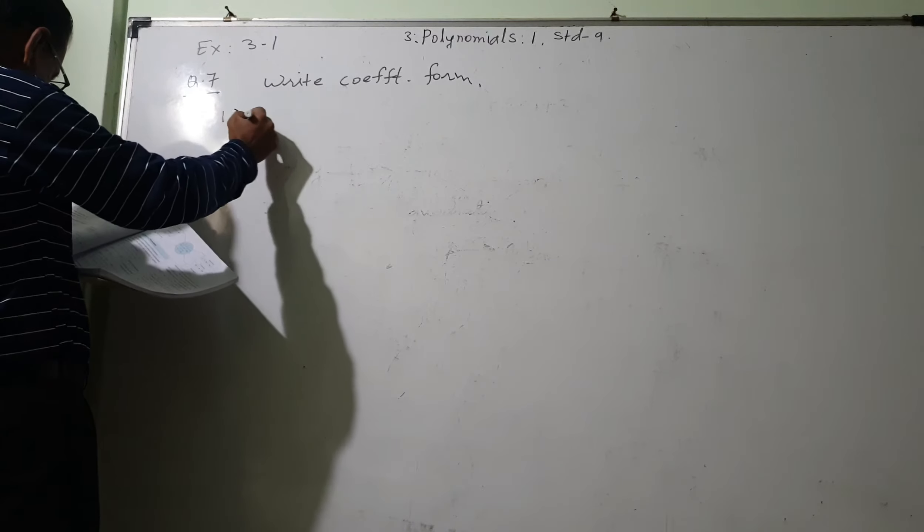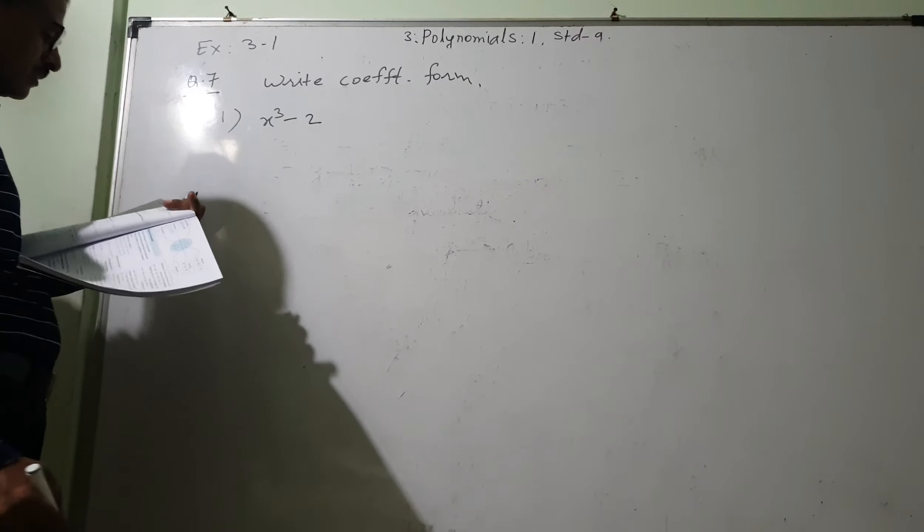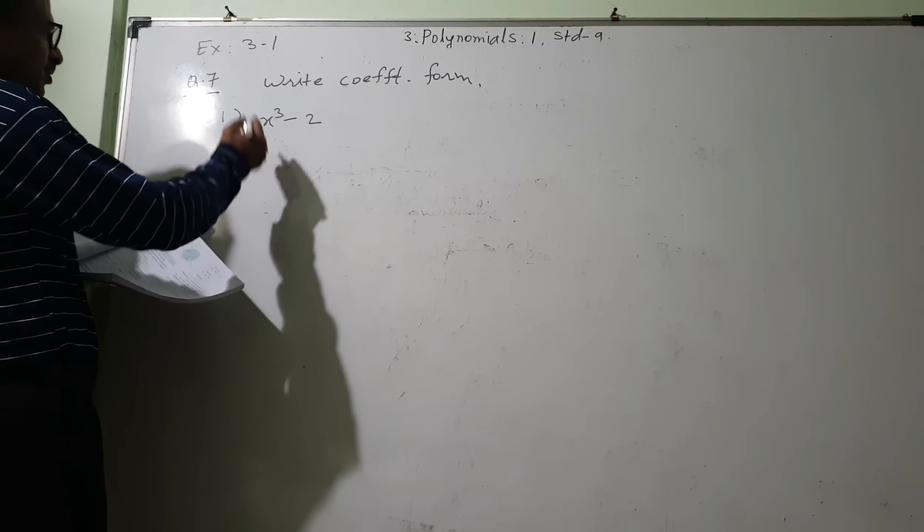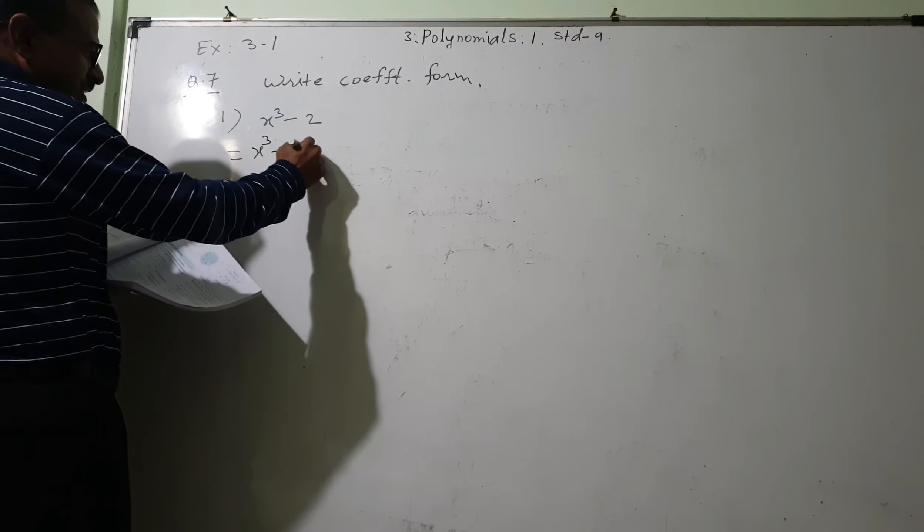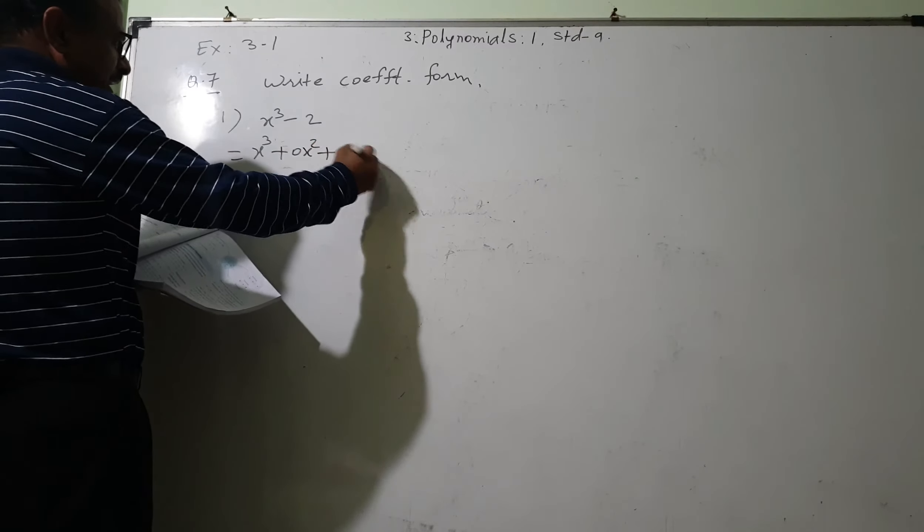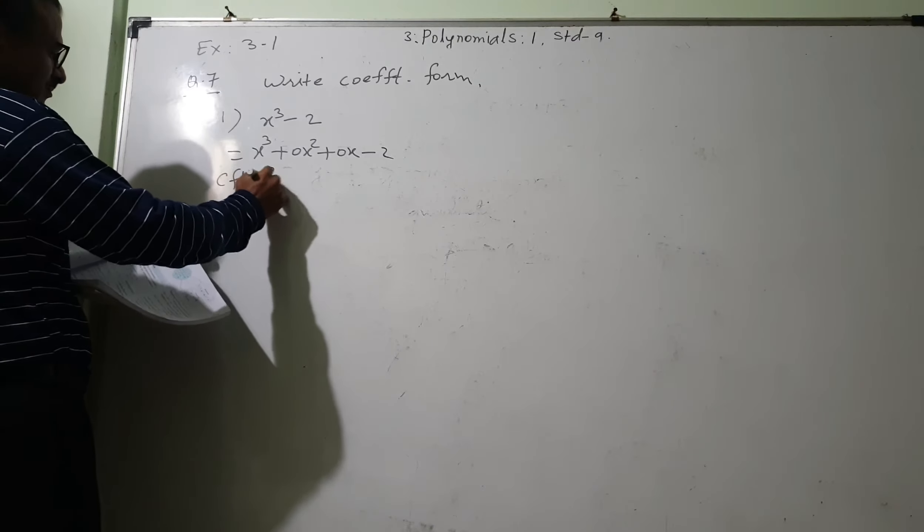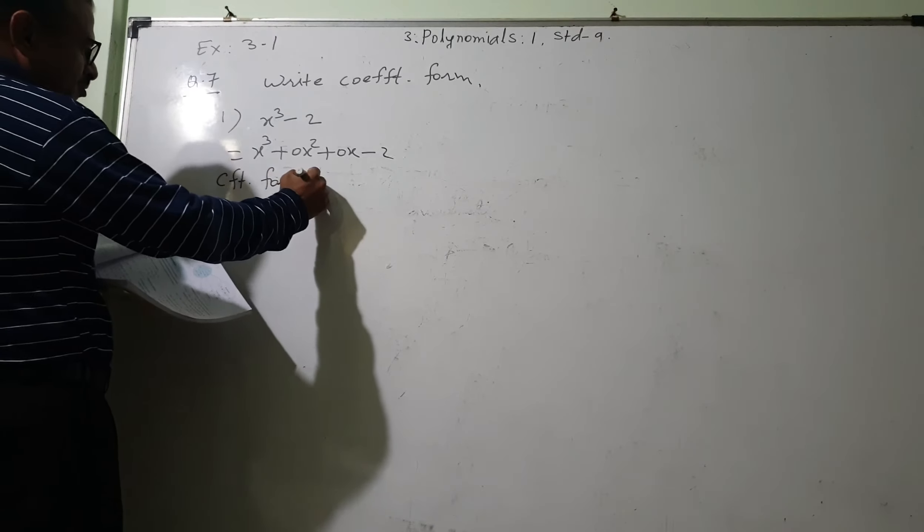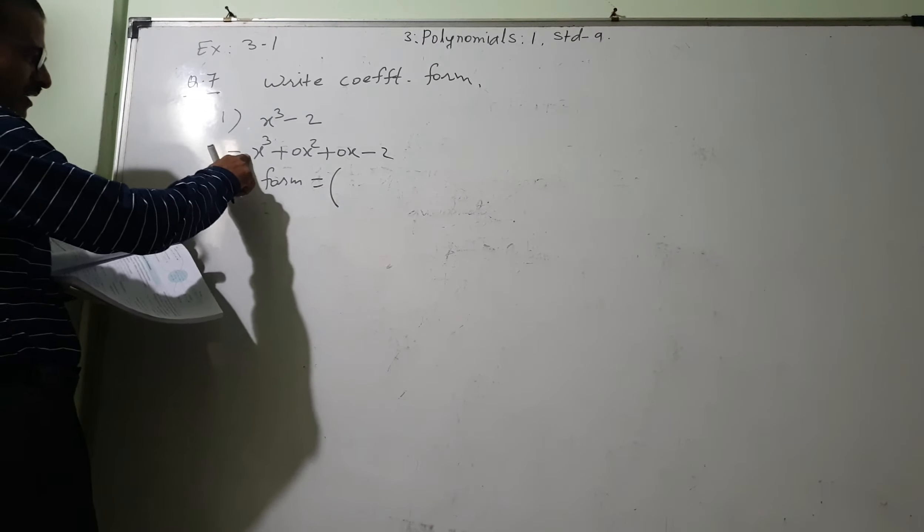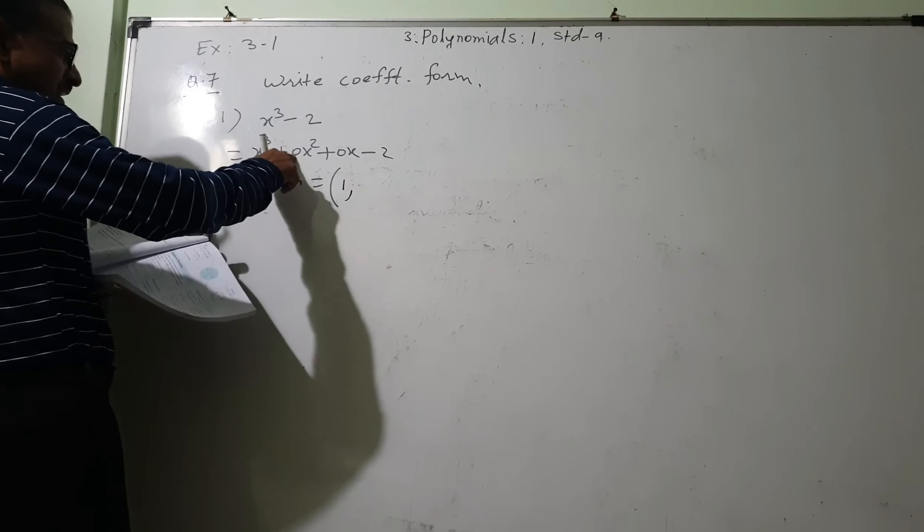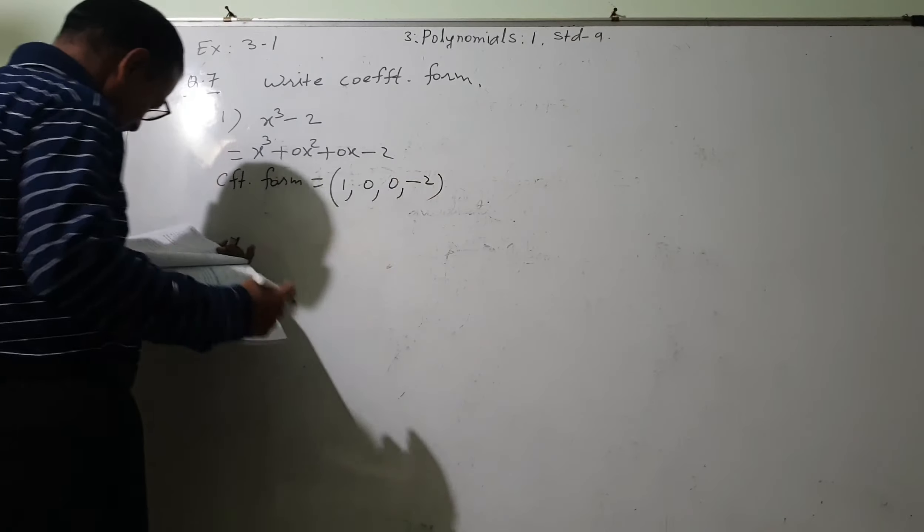Number 1: x cube minus 2. So x cube minus 2, actually this should be like this: x cube plus 0x square plus 0x and then the constant number. Now the coefficient form is, always write in the bracket. Here what is that coefficient? 1. Then here 0, then here 0, then minus 2. This is the coefficient form.